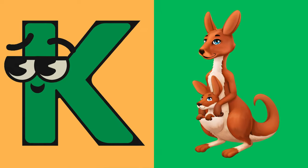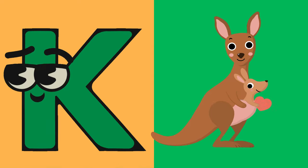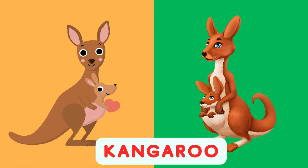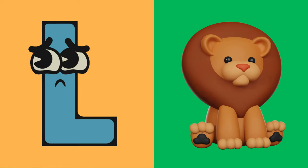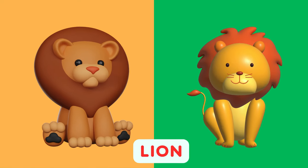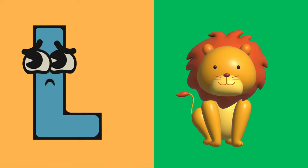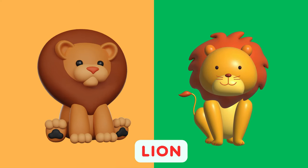K is for Kangaroo, K, K, Kangaroo. K is for Kangaroo, K, K, K. L is for Lion, L, L, Lion. L is for Lion, L, L, L.